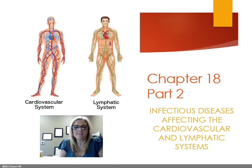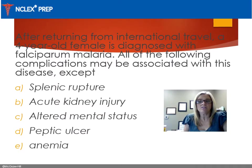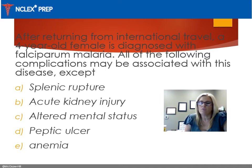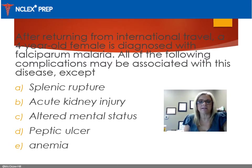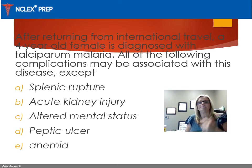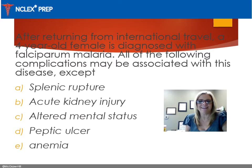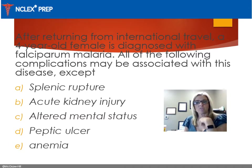We're going to continue with diseases of the cardiovascular system and wrap up with diseases of the lymphatic system. Let's start with an NCLEX prep practice question. After returning from international travel, a four-year-old female is diagnosed with falciparum malaria. All of the following complications may be associated with this disease except which one? Hopefully you chose peptic ulcer, because that's not going to have anything to do with malaria — it involves the kidneys, the spleen, and things related to blood.